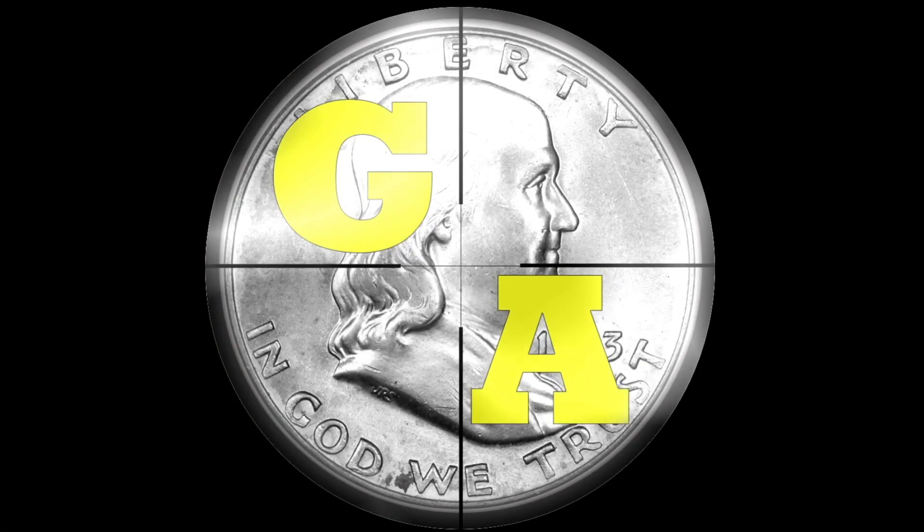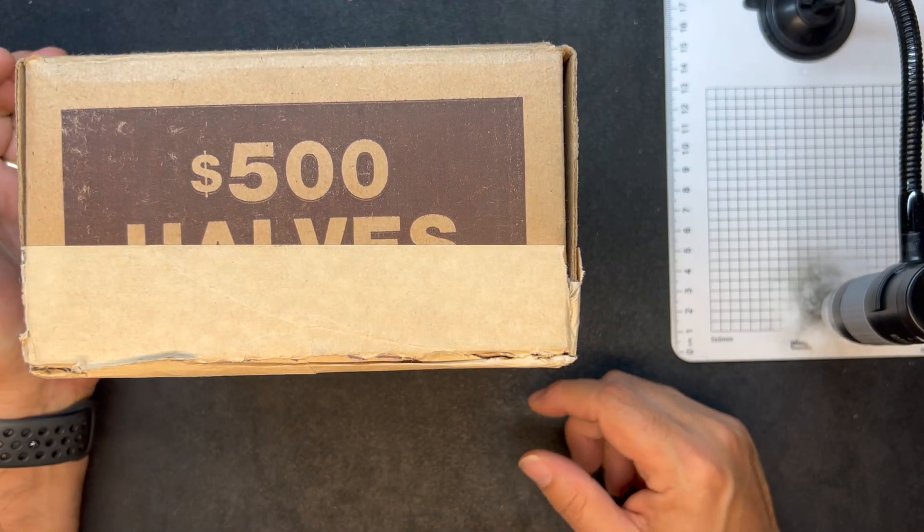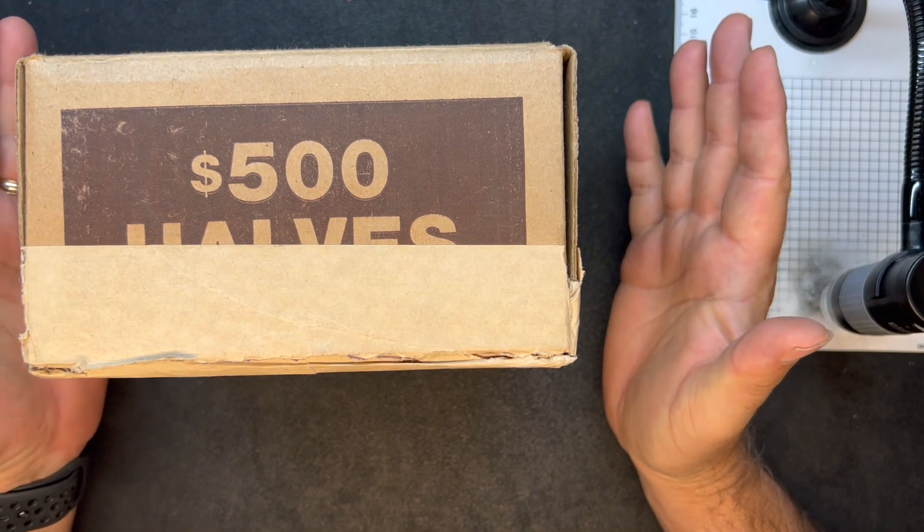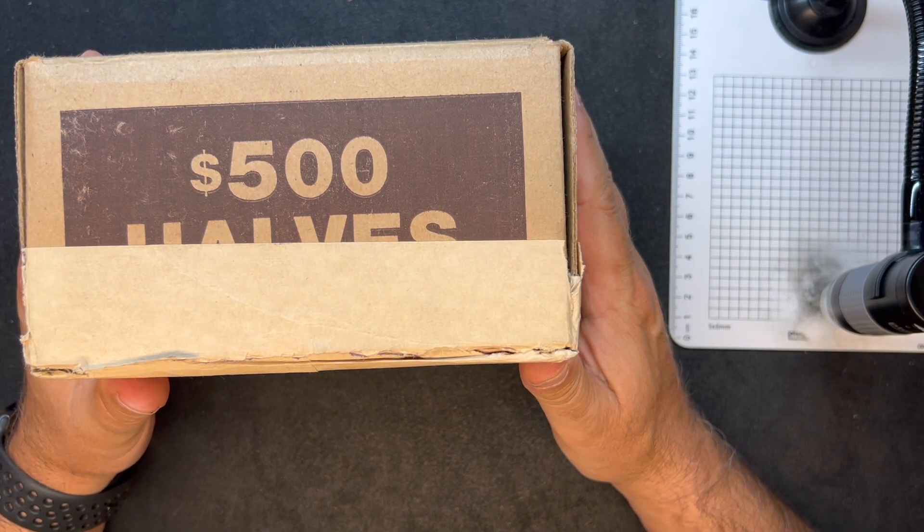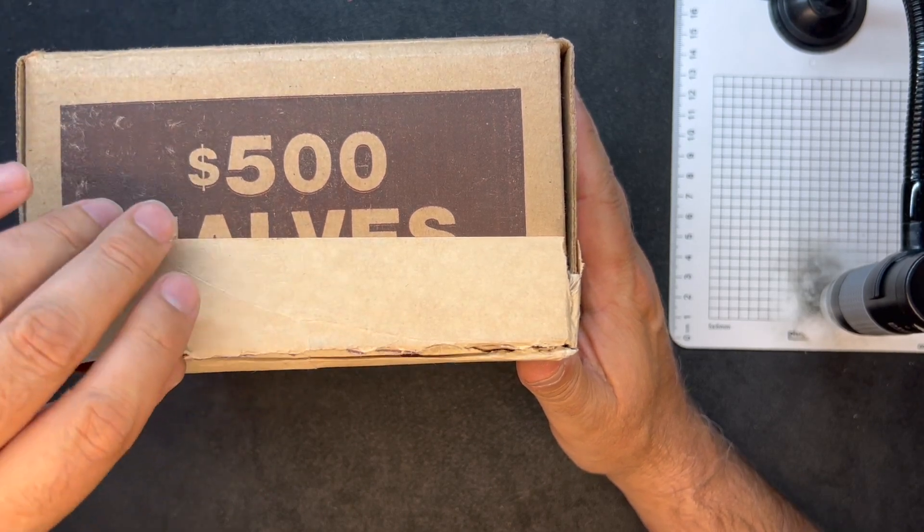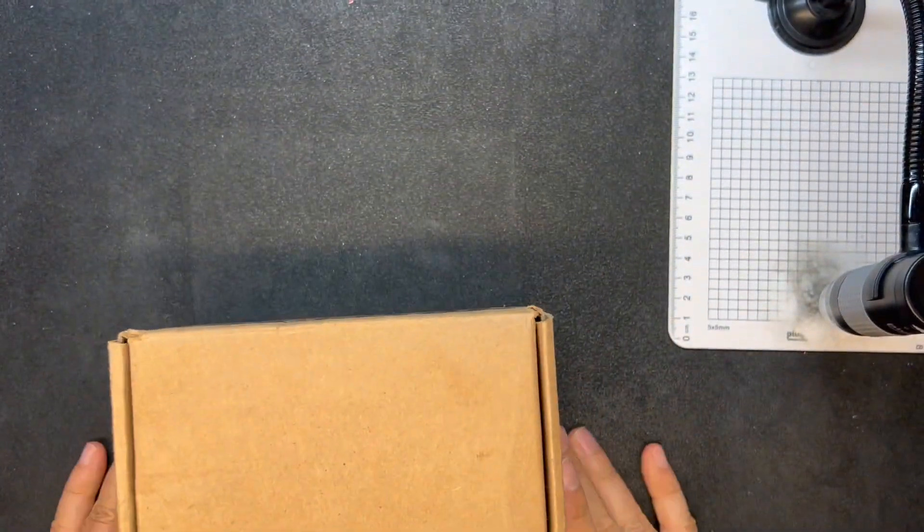What's up, YouTube? Georgia Silver Hunter back, and we're going to be doing a half-dollar hunt today. I was able to pick up three boxes of half-dollars from my local Fifth Third. This may be a one-box hunt, it may be a three-box hunt. We'll see how the boxes produce.